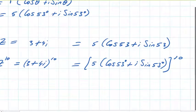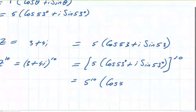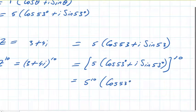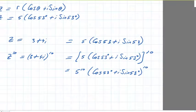Now, on this side, we can just split them up. We can go 5 to the power of 10 outside the bracket, and inside the bracket, it's cos 53 degrees plus i sine 53 degrees to the power of 10. And at this stage, we can use De Moivre's theorem.